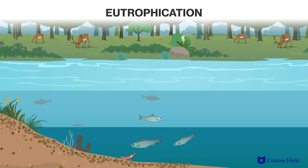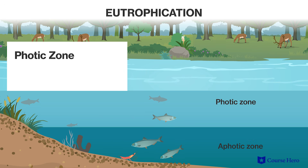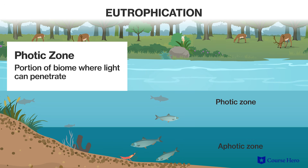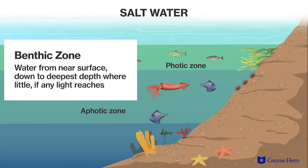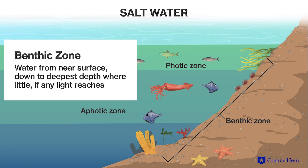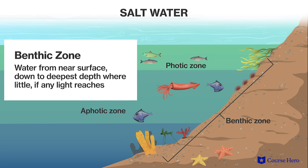Both freshwater and marine biomes are stratified into layers. Photosynthetic organisms need sunlight, so they are restricted to the shallow photic zone, the upper portion of an aquatic environment where light can penetrate. The benthic zone is comprised of water from near the surface down to the deepest depth, where little, if any, light reaches. These zones hold different organisms based primarily on their temperature and sunlight needs.